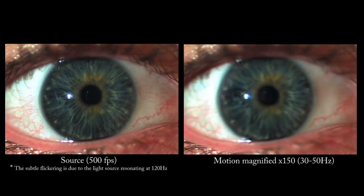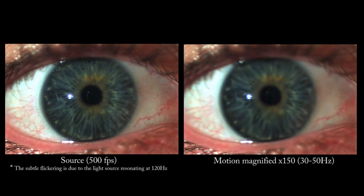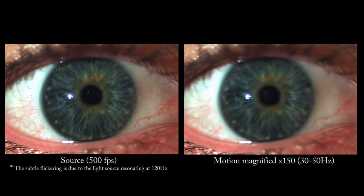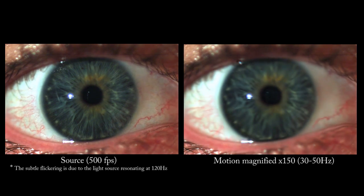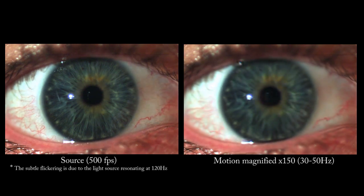When a person fixates at a point, the human eye also makes subtle motions. These motions due to involuntary head or eye movements, such as microsaccades, are amplified in this sequence. They may have medical applications as the frequency of eye movement can have clinically useful data.